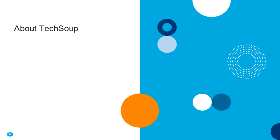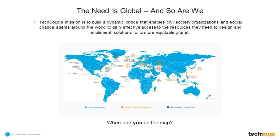I'm going to do a quick overview of TechSoup for those who may not be very familiar with us. Cameron's role helps with our global technology sharing and spreading. Every place that's blue on this map is where we are in the world, which is just about everywhere. We would love it if you would chat in to let us know from where you are joining today. We are building a dynamic bridge to enable civil society organizations and change agents around the world to access resources to make a more equitable planet.